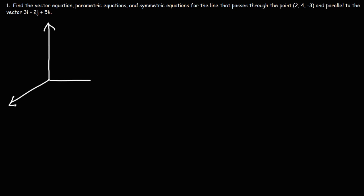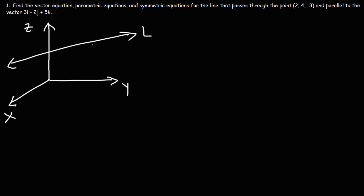Let's say we have a 3D coordinate system where we have x, y, and z axes, and we're going to have a generic line. A line is defined by two things: we need a point on the line and the direction of the line. If we have those two things, we can define any line.